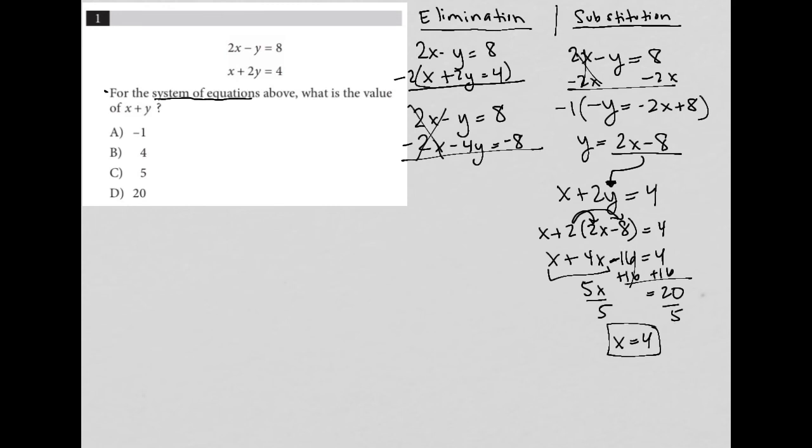So I'm left with negative y minus 4y, which is negative 5y. And then 8 minus 8, which is 0, which tells me that my y value is 0.